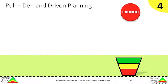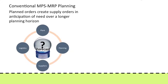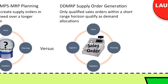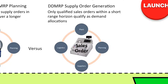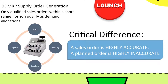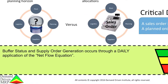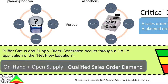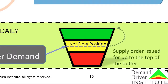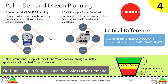Demand-driven planning is the fourth component of DDMRP. In DDMRP, planning is the process of generating supply orders. DDMRP uses a unique equation. The demand element of that equation has no forecasted orders. Conventional MRP planning uses planned orders derived from forecasts to generate orders in anticipation of need over a longer planning horizon. DDMRP uses only qualified sales orders within the immediate range horizon as demand allocations. A critical difference is in the quality of the demand signal — a sales order is highly accurate, an explicit statement of what will be consumed, while planned orders are highly inaccurate. This unique supply order generation equation is called the net flow equation. The quantity on hand is added to the quantity of open supply, then quantity of qualified demand is subtracted. This produces the day's net flow position. If the day's net flow position is below the top of the yellow zone, an order is issued for the amount to reach the top of the green zone. DDMRP is designed to never net to zero.